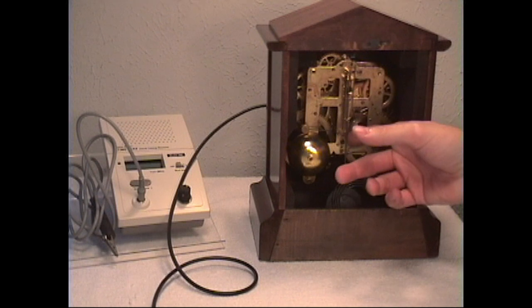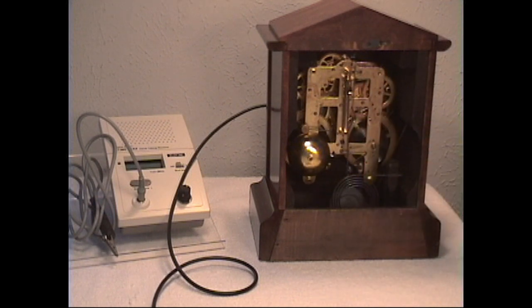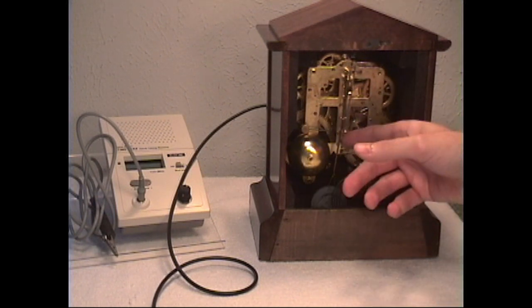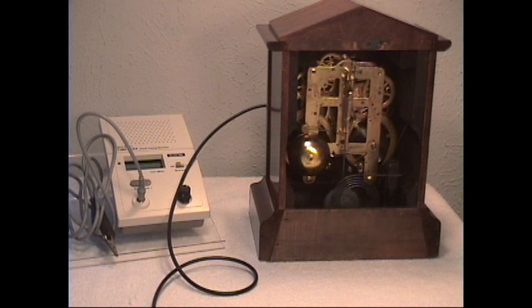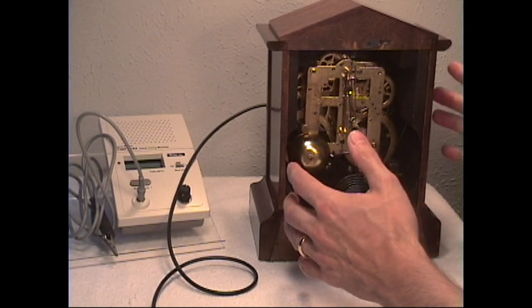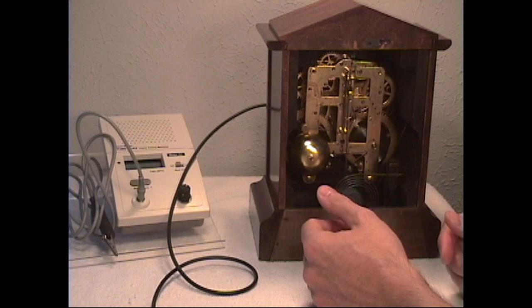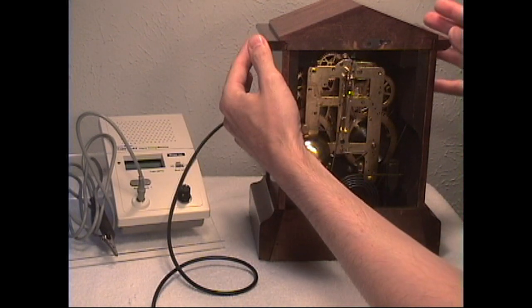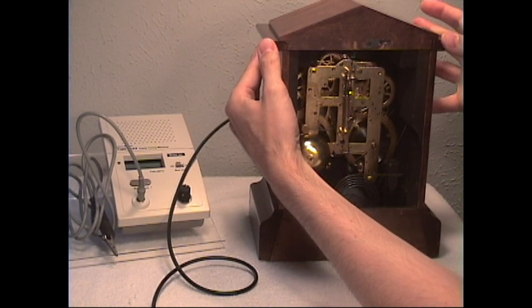Now let's listen to that beat again. One way to see which way to bend the crutch is to lift the movement or lift the clock up to the right or to the left until you hear the beat improve. So first we'll move it to the right and see if the beat improves.